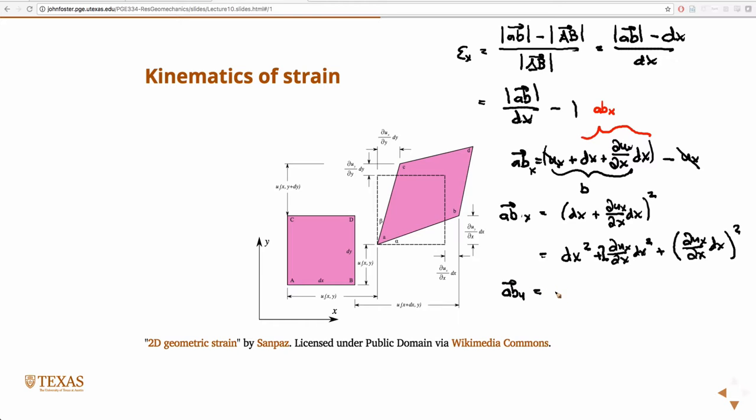The Y component of AB is, we're just going to write down the Y position of B. That's U in the Y direction, plus this thing. So, U in the Y, plus partial U, Y, partial X, DX, minus U, Y. So, those guys cancel. So then, then the ABY squared is just partial U, Y, partial X.